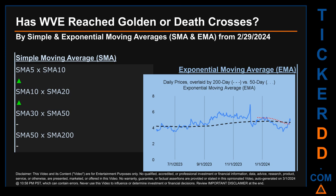Has WVE price reached golden or death crosses? Golden cross and death cross are basic signals that compare average prices across two specified trade-day ranges — a short-term versus a long-term range average, for example, 5-day versus 10 trade days. A golden cross is a bullish signal; it appears when a ticker's short-term moving average crosses above its long-term average. Conversely, a death cross is a bearish signal when the short-term crosses below its long-term moving average. We looked at both simple moving average (SMA) and exponential moving average (EMA), the latter giving more weighting to recent prices.